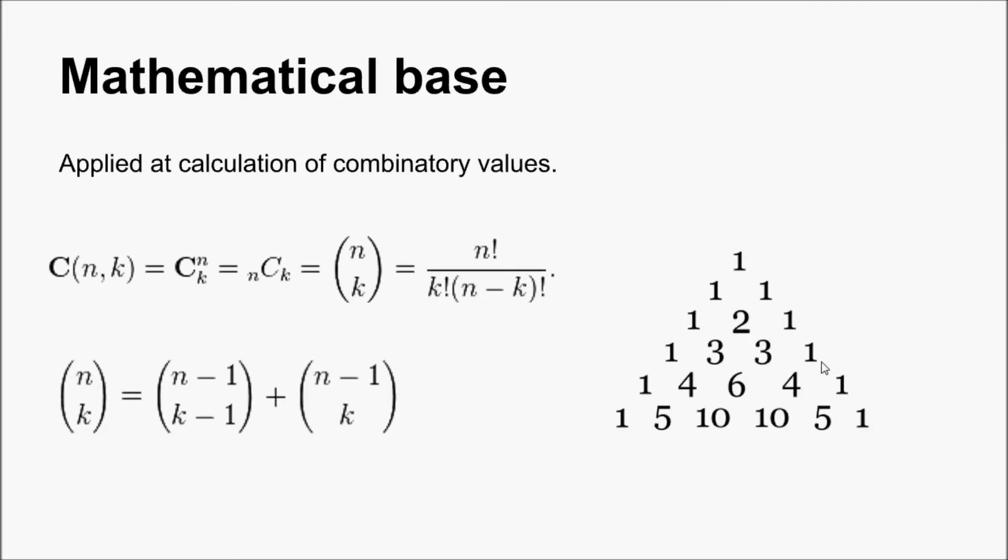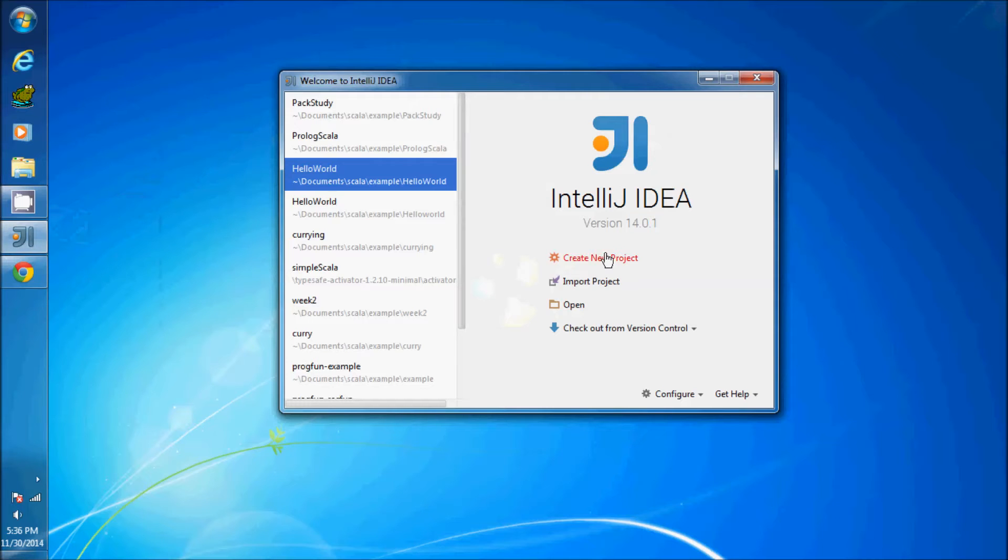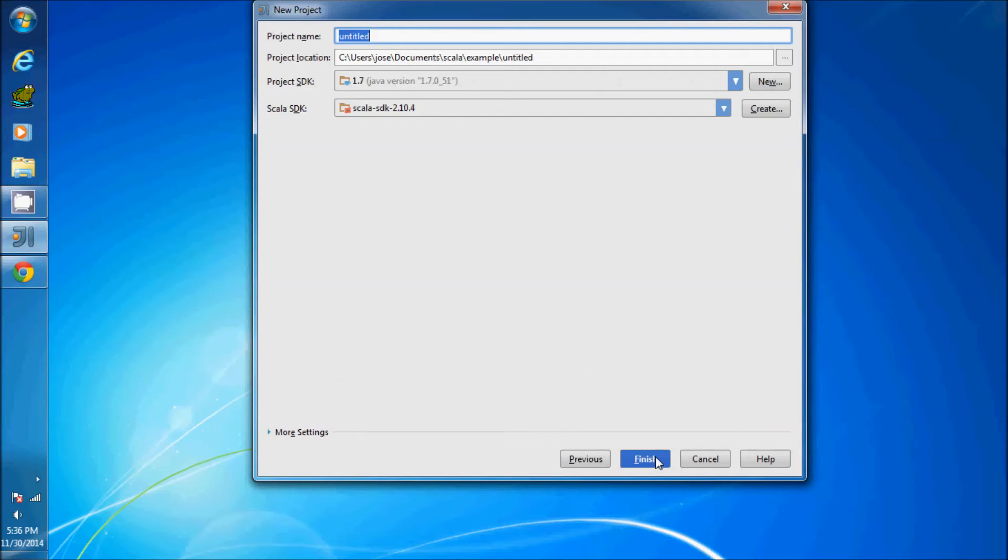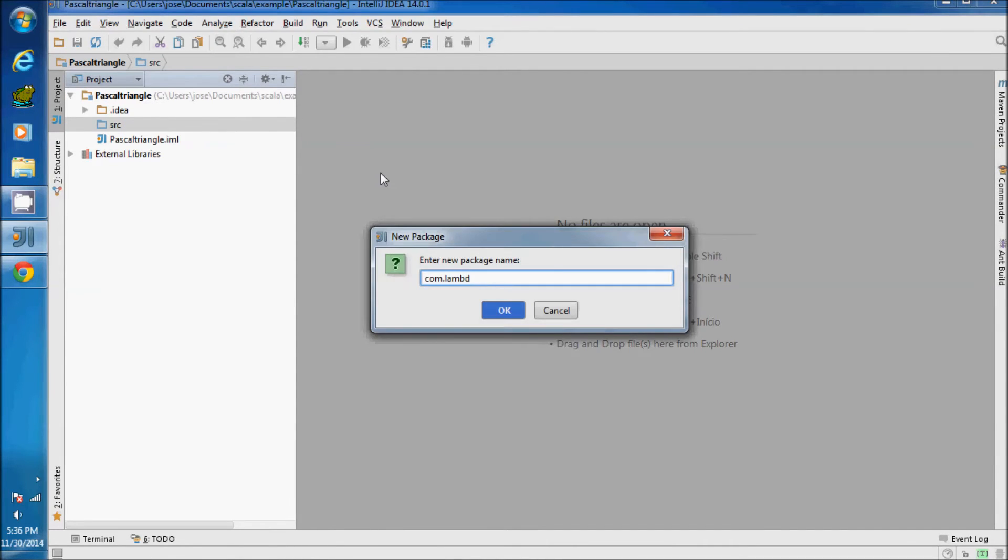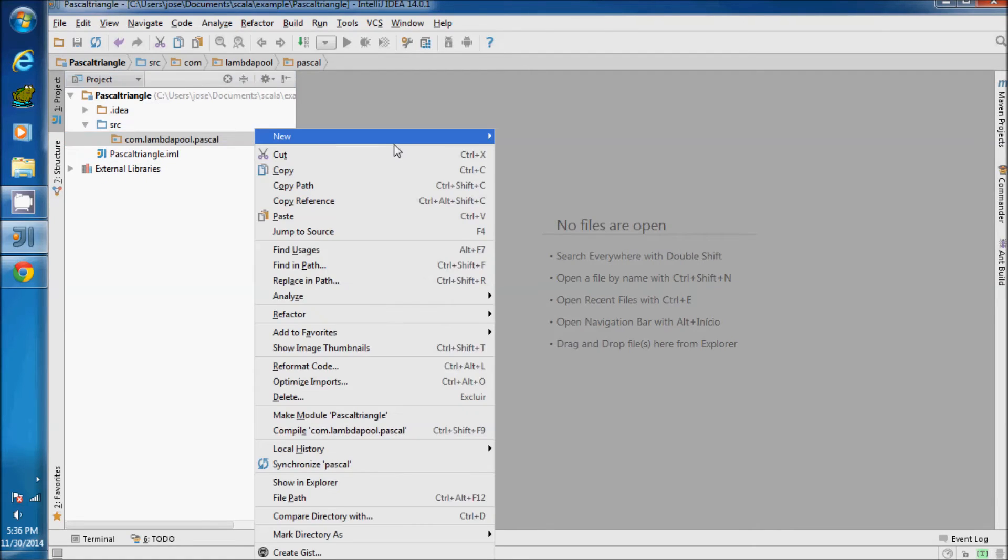That is, the solution of 10 choose 8 is 45. Pascal's triangle has many properties and contains many patterns of numbers. So let's see how to implement a Pascal triangle using Scala language.